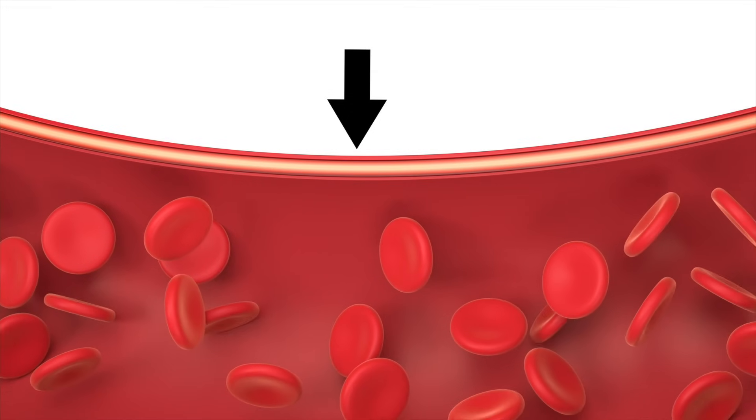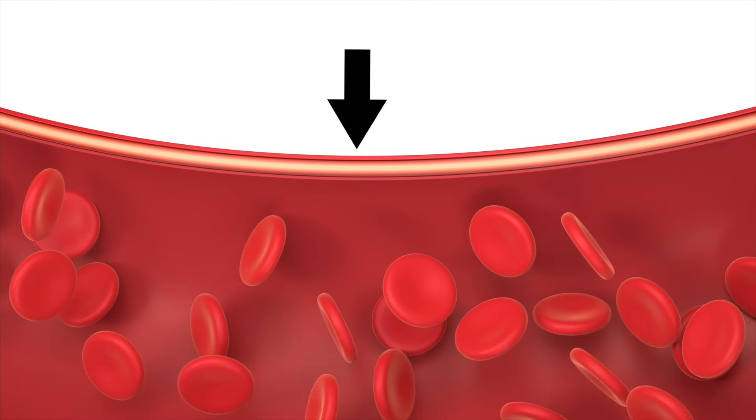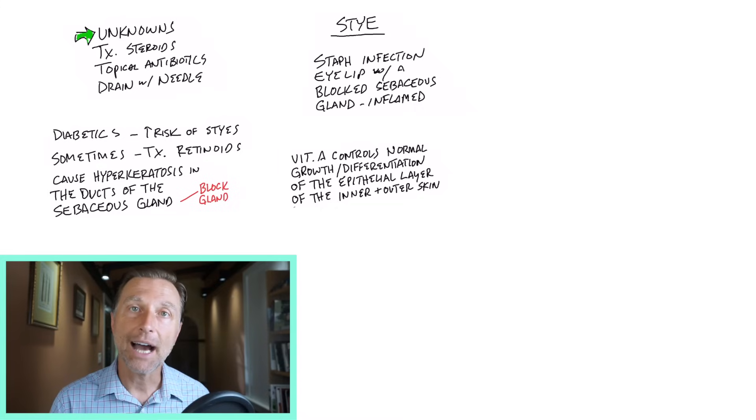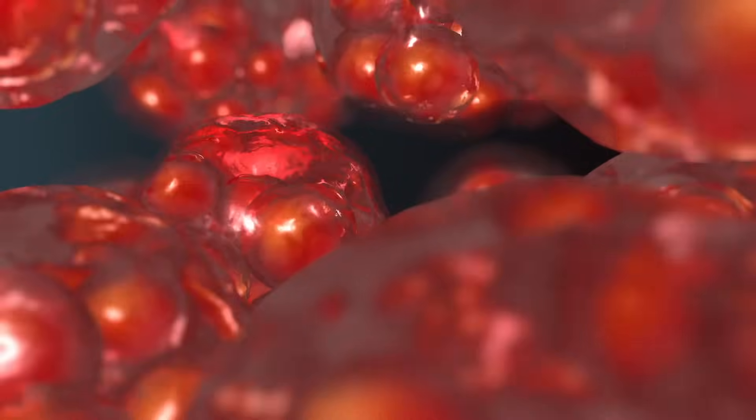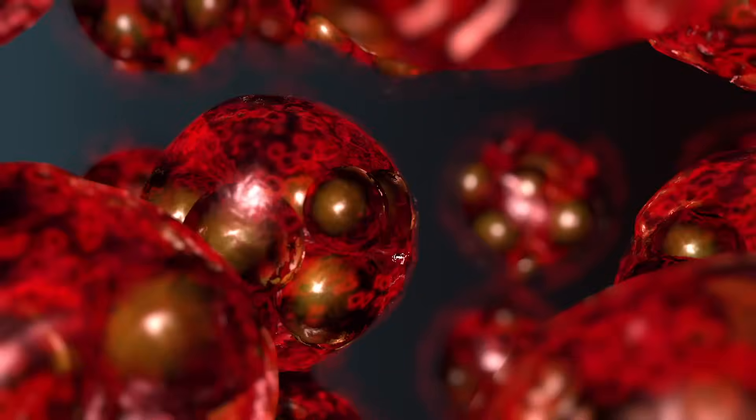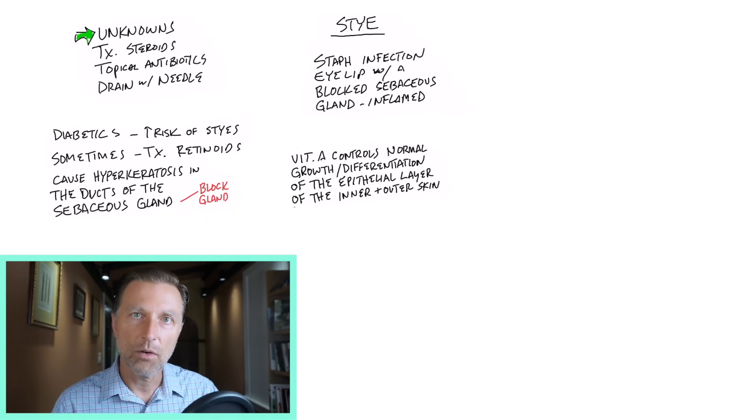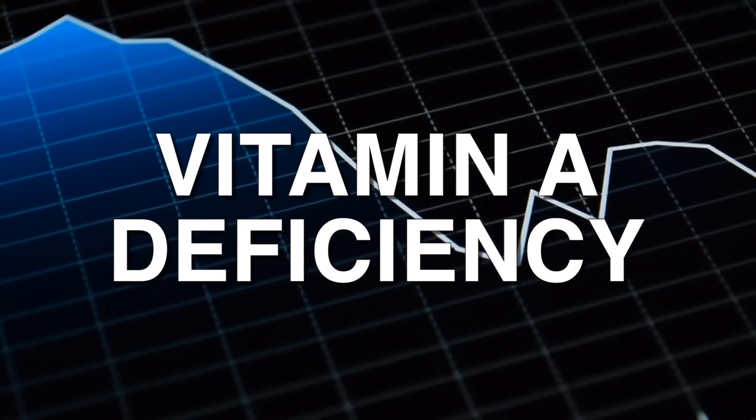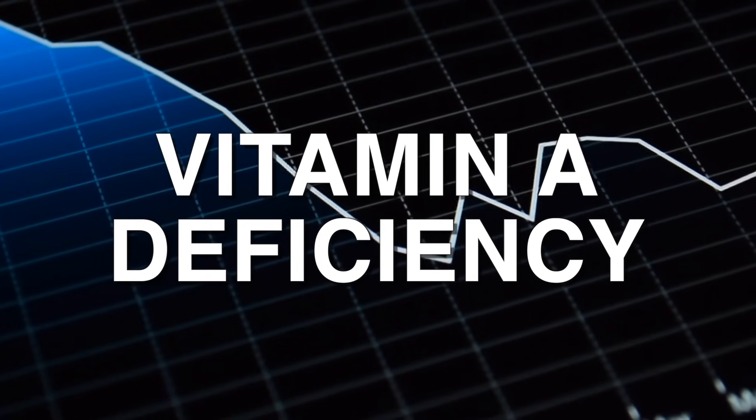One big purpose of vitamin A is it controls the epithelial layer, that's the outer portion of your skin, both external and internally, like even in your sinuses, underneath your eyelid, or even in your digestive tract. So vitamin A controls that. And if we're lacking that control, we don't necessarily get the normal cells. We can get some abnormal cells as well. And I did find a study on humans that showed a significant vitamin A deficiency in those who had a stye versus those who did not.